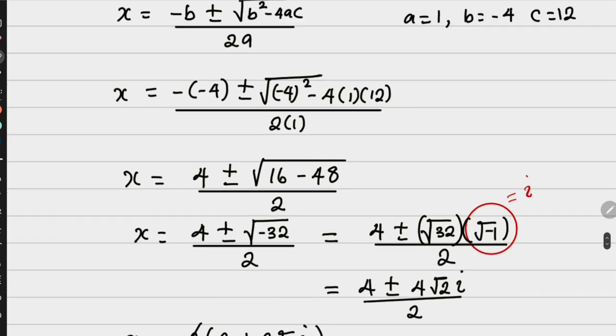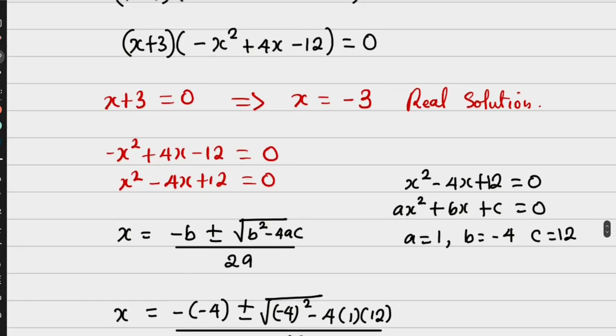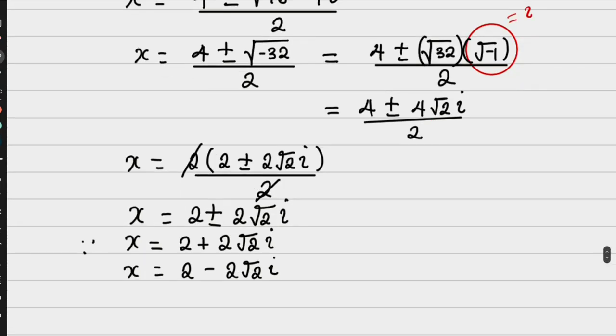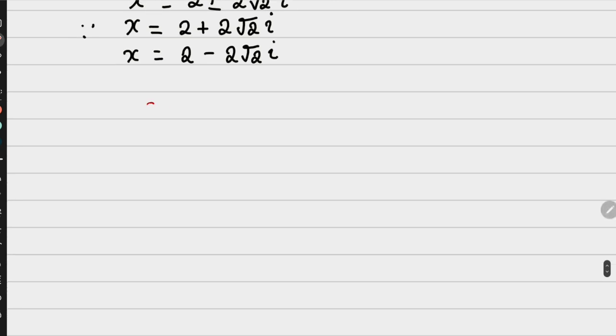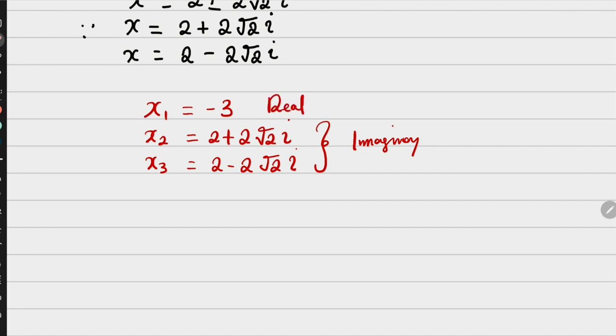Now if you check, we have a value of x initially which is minus 3, which is the real root. So in summary, x1 is equals to minus 3. Then x2 will be 2 plus 2 root of 2 i. Then x3 will be 2 minus 2 root of 2 i. Now these two are imaginary, while this is a real solution. So we have two sets of solutions, we have the imaginary and the real.